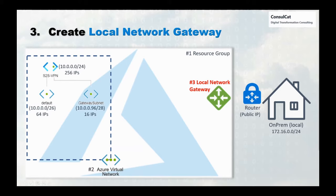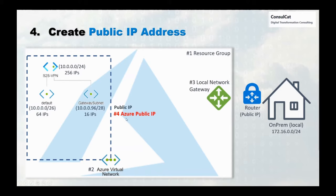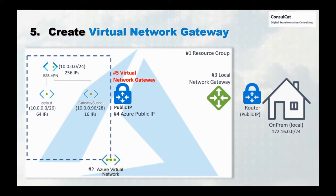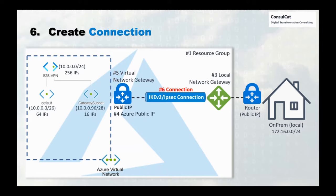Then we will create a local network gateway — step number three. This is going to use the local IP address that we have in the internet router on-prem. Step number four, we will create an Azure public IP address, and this IP address is going to be used by the virtual network gateway, which is step number five. This virtual gateway is going to link with the on-prem environment through the connection in step number six — the VPN itself — which is going to be the bridge between our on-premise environment and the Azure environment.